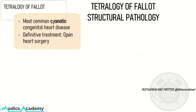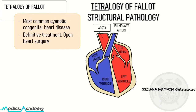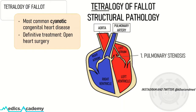Tetra means four, so there are four things that go wrong in Tetralogy of Fallot. It is useful to remember them in the following order, starting with number one: pulmonary stenosis — the complete closure of the pulmonary valve.